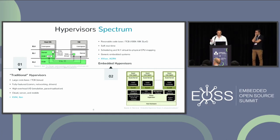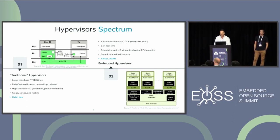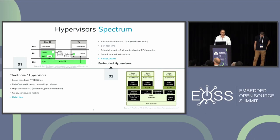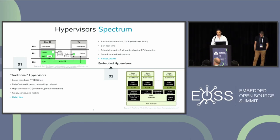Moving right in the spectrum, you have embedded hypervisors with a reasonable code base — typically in the hundreds of Ks. They provide some soft real-time guarantees and have the possibility of scheduling multiple virtual CPUs atop one physical CPU. They target generic embedded applications without strict real-time guarantees. Examples are X-Visor or Acorn.